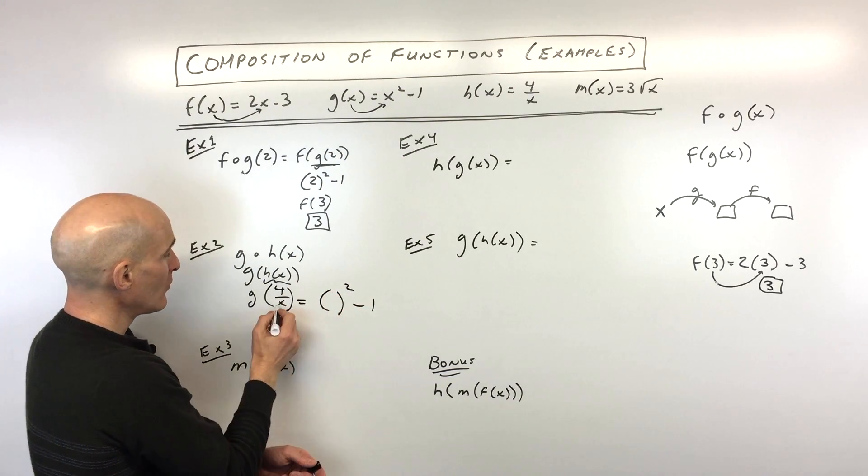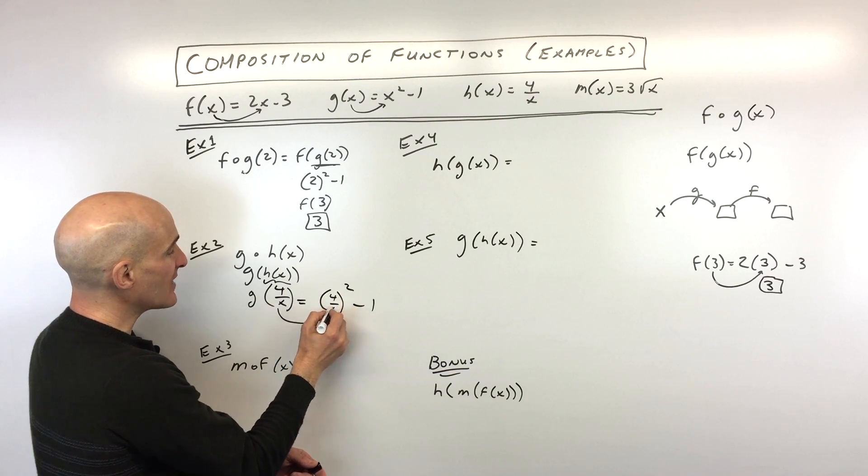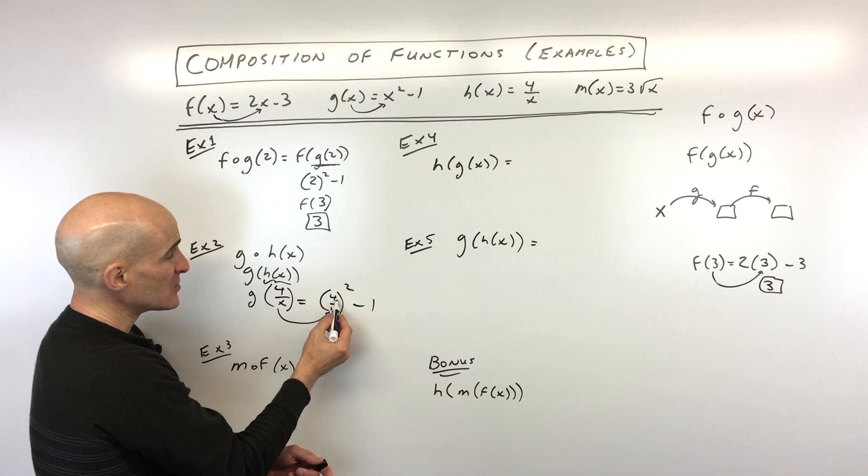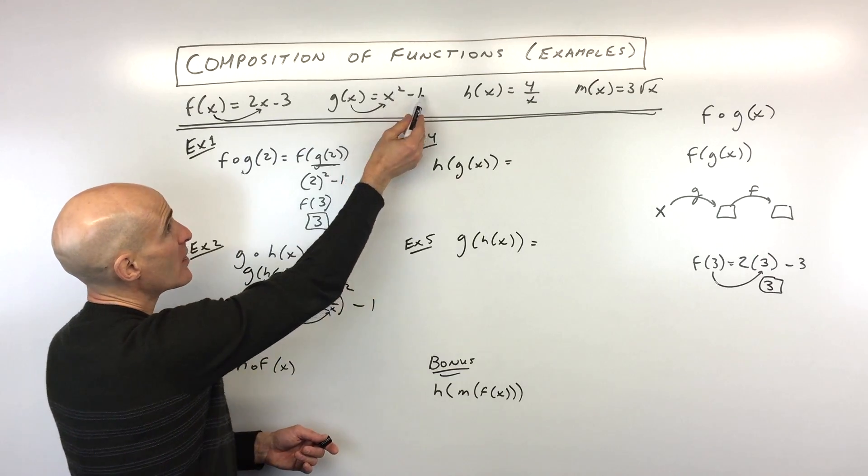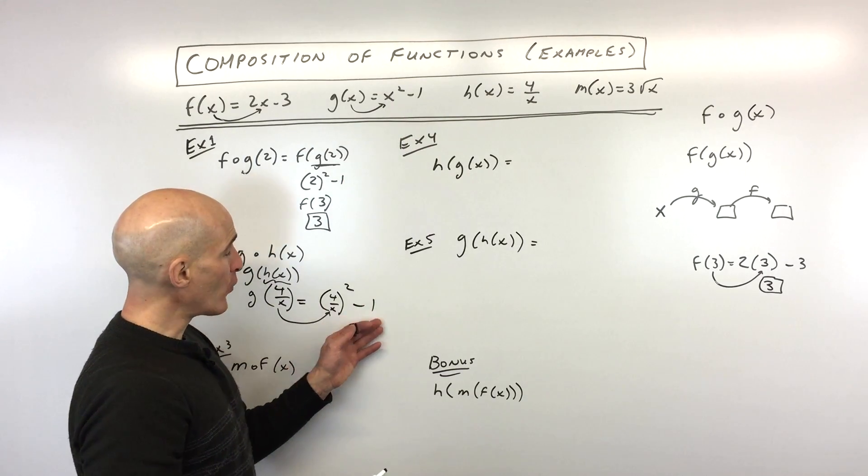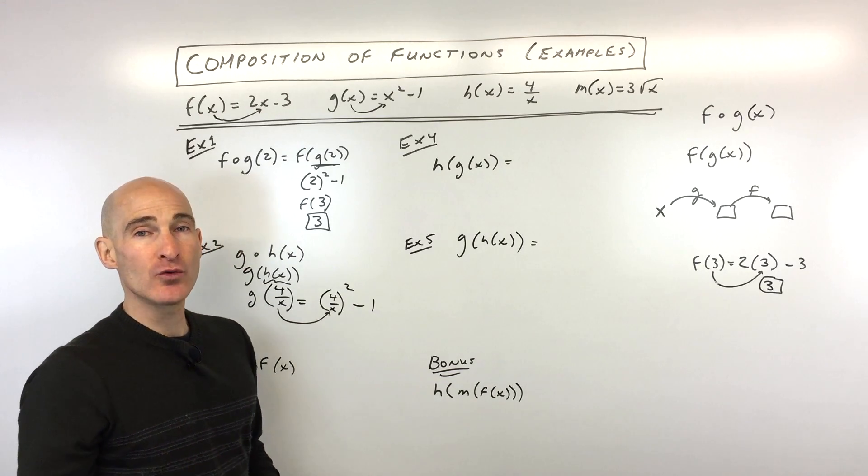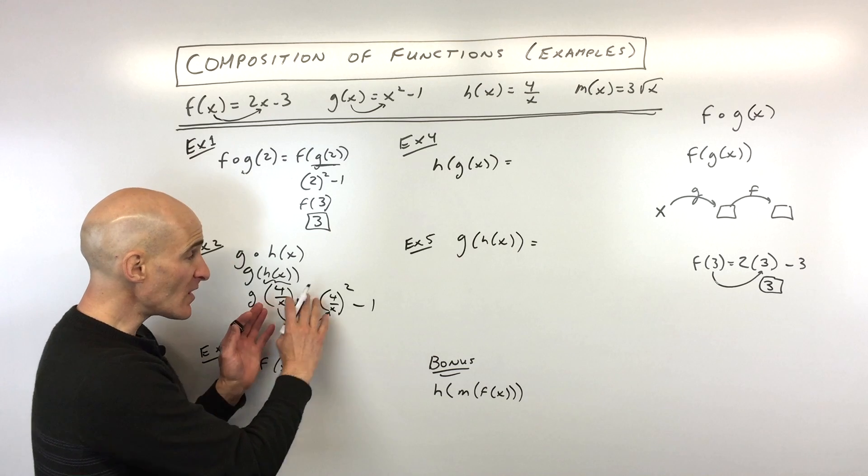So that's going to equal, we're going to put the 4 over x in place of x. This is like our new input. Think of x as your input. Substitute that in, we're going to then square it, and we're going to subtract 1. Now before I simplify, oftentimes in these problems we'll ask what is the domain, or what are the restrictions on the domain?